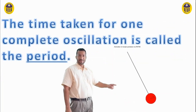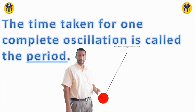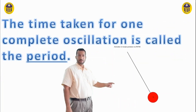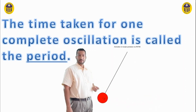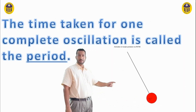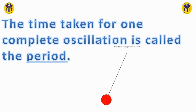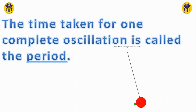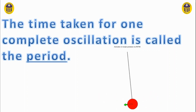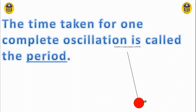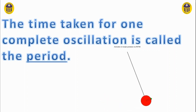The time taken for one complete oscillation is called the period. As we can see here, it is the time it takes to go from the left side to the right side and back to the left side. It could also be the time taken to go from the middle to the right, all the way to the left, and back again to the middle.